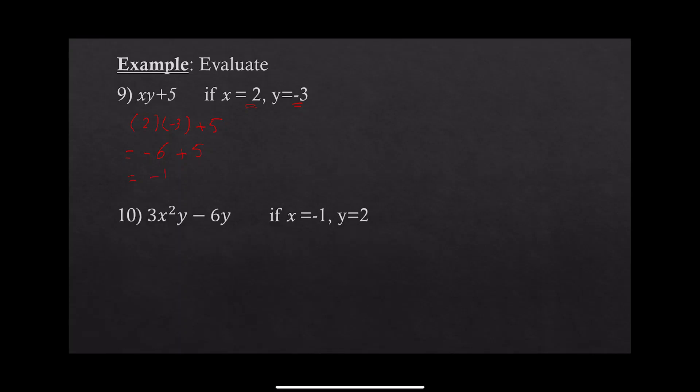Example 10: 3x squared y minus 6y, with x equals negative 1 and y equals 2. Replace all x's and y's with brackets: 3 times bracket squared times bracket, minus 6 times bracket. Substitute negative 1 for x and 2 for y in all positions.